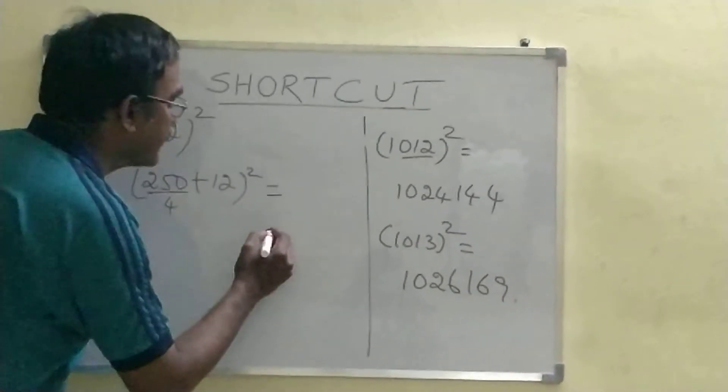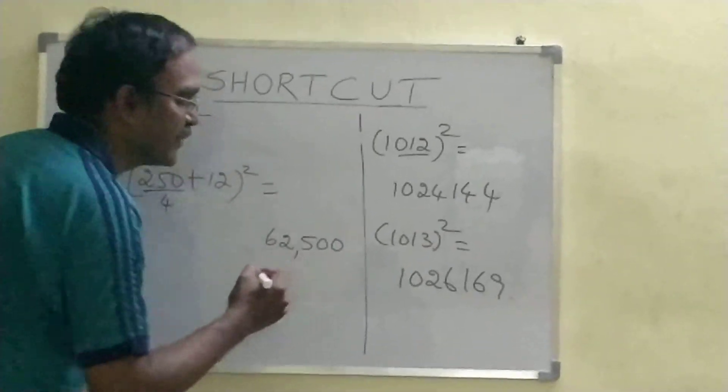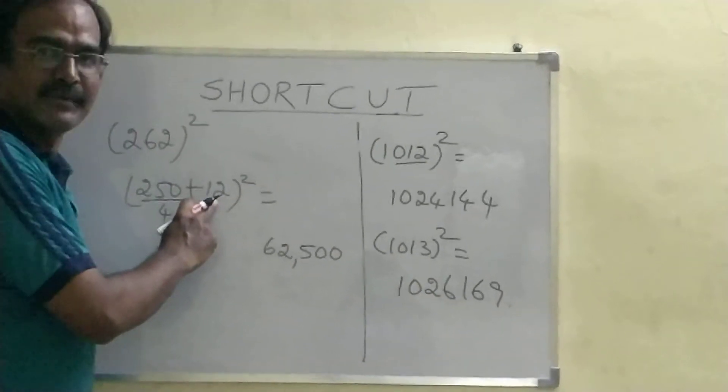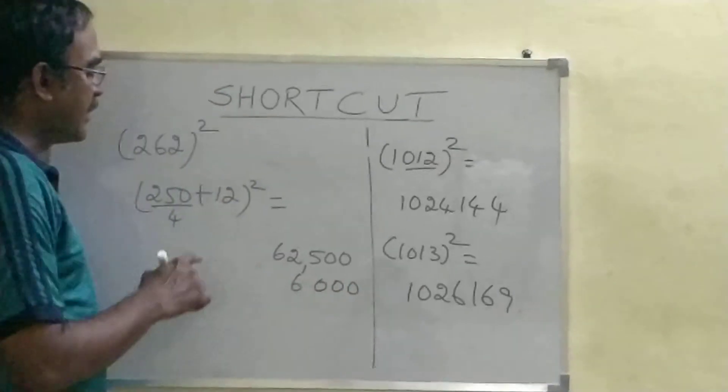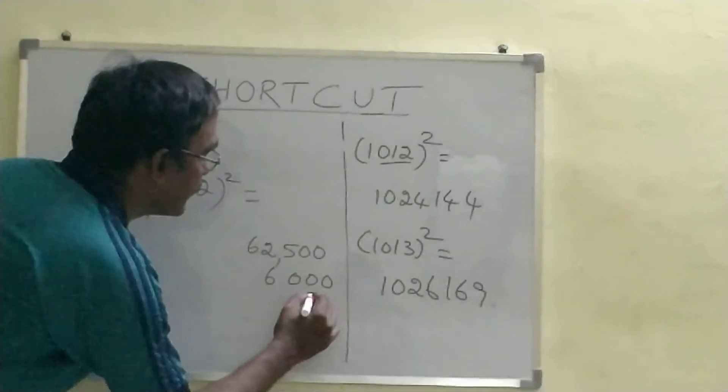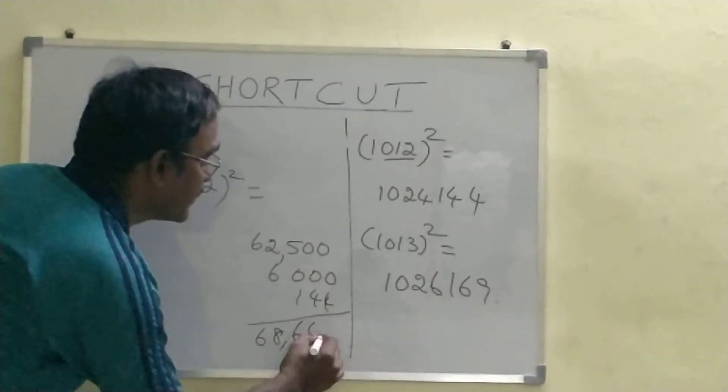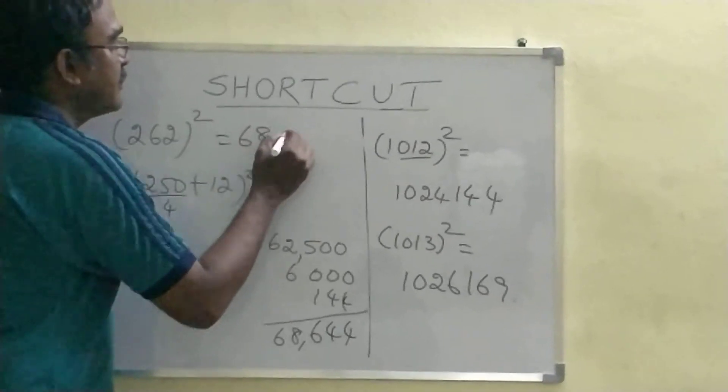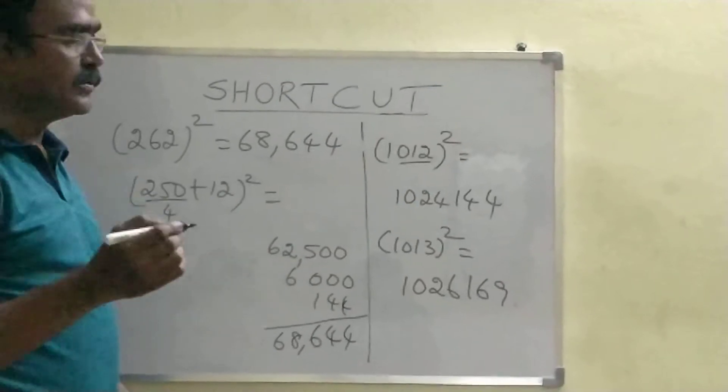250 divided by 4 is 62.5 which is nothing but 62,500. I am going to multiply this 12 with 500. So, 12 times 500 is 6,000. Let me add up here. And 12 square is 144. So, my answer is 68,644. Now, you will get an idea of how to do this.